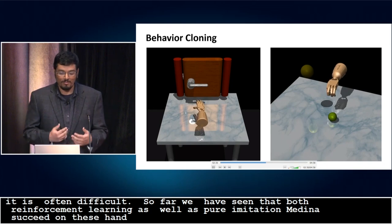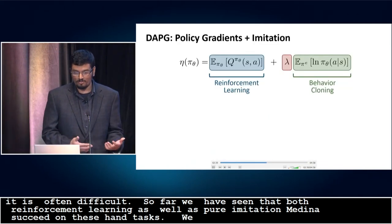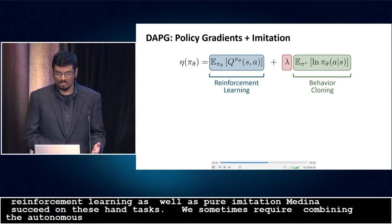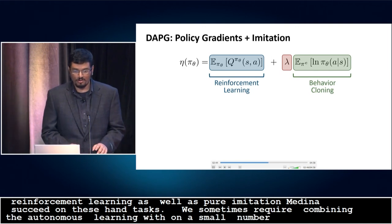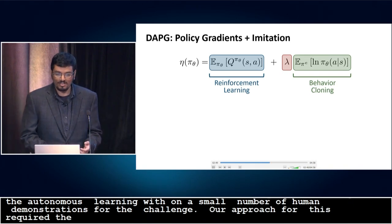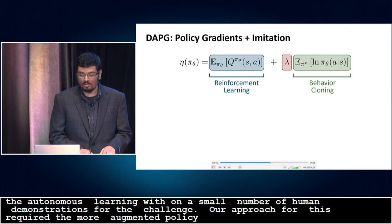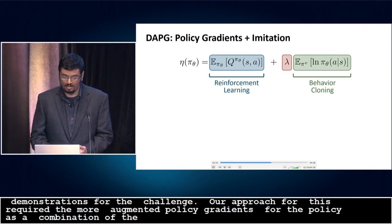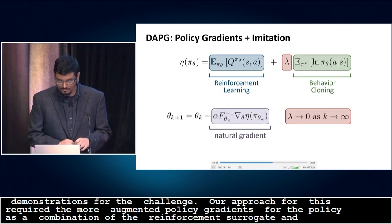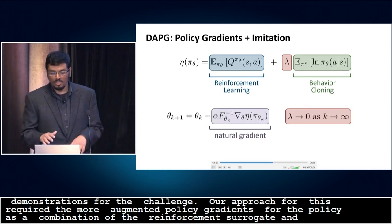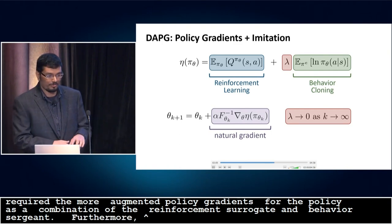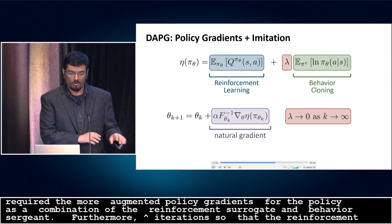What we require is to combine the generalization and autonomous learning capabilities of reinforcement learning with a small number of human demonstrations to circumvent the exploration challenge. Our minimalist approach, which we call Demo Augmented Policy Gradients (DAPG), constructs a surrogate function for the policy as an additive combination of the reinforcement learning surrogate and the behavior cloning surrogate. We then perform natural gradient ascent on this composite objective. Furthermore, we anneal away the behavior cloning surrogate over iterations so that ultimately we solve for the reinforcement learning problem and optimize on the task reward.